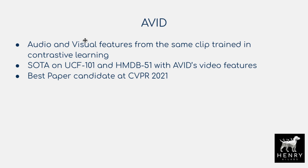The first algorithm is AVID, which uses the usual contrastive learning framework with positive pairs sampled from the same video clip. This achieves state of the art on the UCF 101 and HMDB 51 datasets and is a best paper candidate at the CVPR 2021 conference.